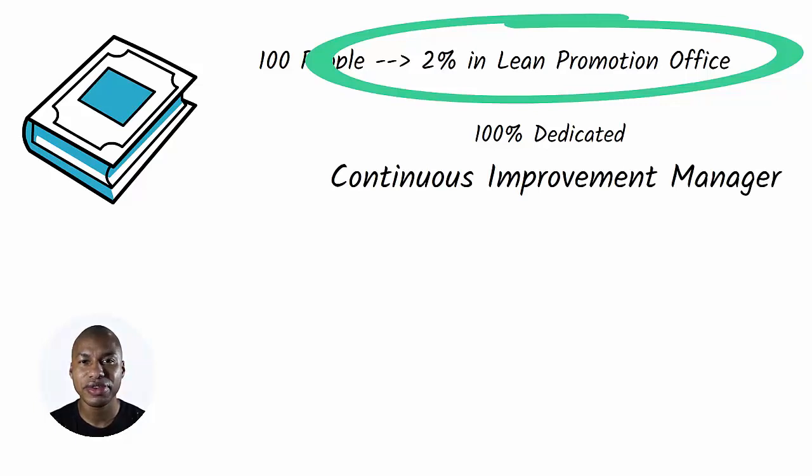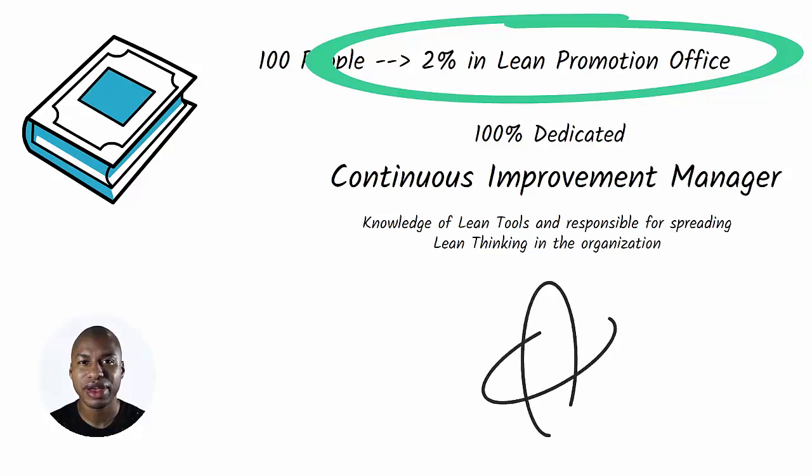The continuous improvement manager and the continuous improvement engineers are the custodians of the knowledge of lean tools and those responsible for spreading lean thinking in the organization. The ideal continuous improvement manager is influential in the organization, is a lean believer, and works with line managers to help them get results.